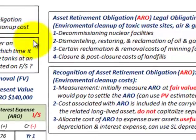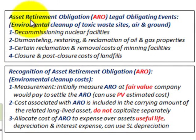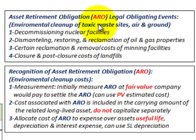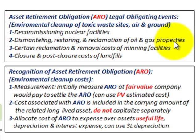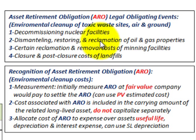Let's look at a better definition of what AROs would be. Asset Retirement Obligations — the legal obligating events would include environmental cleanup of toxic waste sites, both air and ground cleanup. Number one: decommissioning of nuclear facilities. Two: dismantling, restoring, and reclamation of oil and gas properties. Three: certain reclamation and removal costs of mining facilities. And four: closure and post-closure costs of landfills. So we've got a broad number of items that would be considered AROs for cleanup costs.